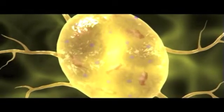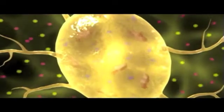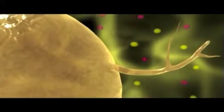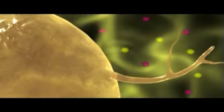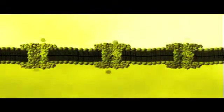A nerve impulse is produced by the movement of positively charged ions across the cell membrane. There are more potassium ions inside of the cytoplasm than outside the cell and more sodium ions in the fluid outside the cell than in the cytoplasm. Since both potassium and sodium ions diffuse across a cell membrane, the equal distribution of these ions must be maintained by active transport.